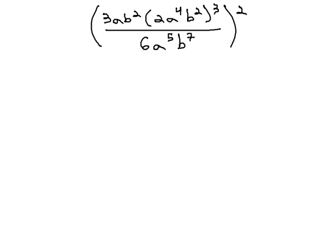Order of operations tells us to start with the innermost parentheses and simplify what we can inside there. There's nothing we can simplify with 2a to the 4th b squared, so we'll move on inside the larger parentheses to the exponents or power rules. We do have an exponent of 3 outside the parentheses here, and we'll put that exponent onto each factor, because they're all multiplied inside.